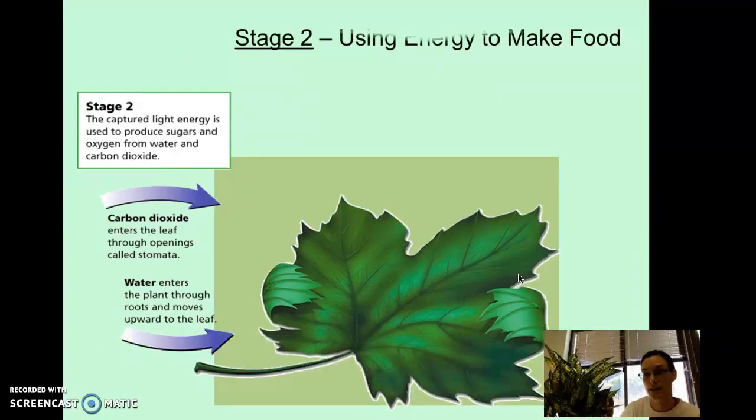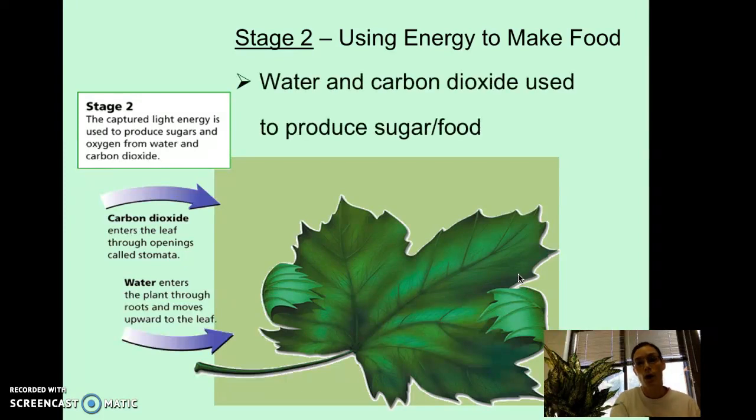Stage two is using energy to make food. So the plant captures that sunlight. And then water and carbon dioxide are used to produce sugar and food. So if we take a look at this caption here, the captured light energy is used to produce sugars and oxygen from water and carbon dioxide. So the carbon dioxide enters the leaf. Water enters the plant through the root. So we need both of those things. And sunlight is creating the reaction. And sugars and foods are produced inside that plant.